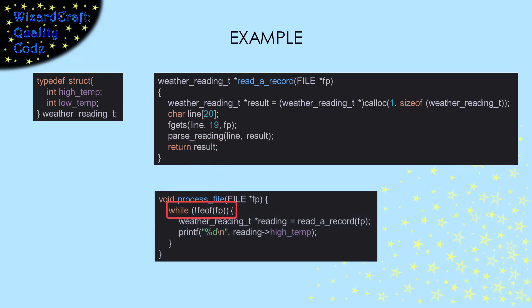ProcessFile is processing an entire file by looping calls to read_a_record until it hits end of file. This leaks because the space we allocated is never freed. ProcessFile should free it after it finishes using it. If this was processing a large file, this could be a large problem.